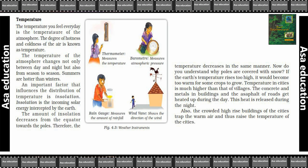Insolation is the incoming solar energy intercepted by the earth. Insolation kya hai — ek tarah se hamaari earth pe jo solar energy aa rahi hoti hai use hum insolation kehte hain. The amount of insolation decreases from the equator towards the pole, therefore the temperature decreases in the same manner. Ab isse aapko samajh mein aa gaya hoga ki poles jo hain zyada tar snow se kyun dhake rehte hain.